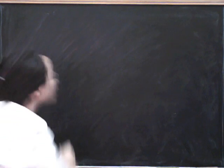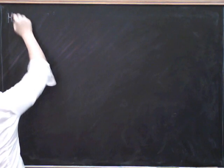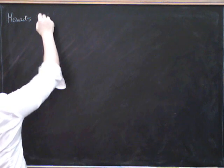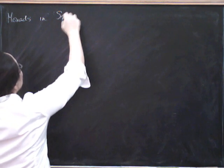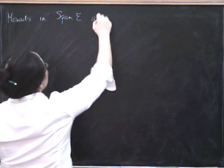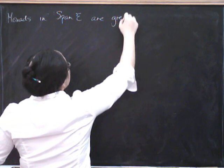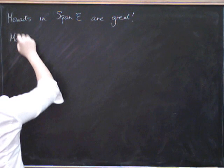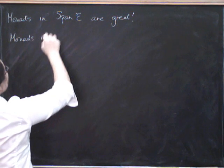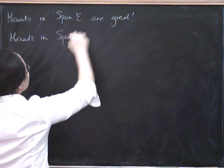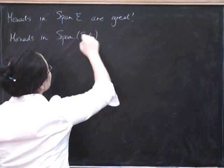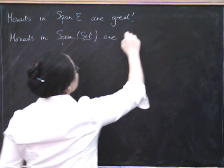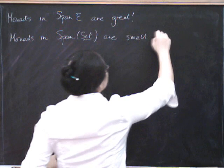So the point I really want to make is the following. It turns out that monads in this bi-category are really fantastic in span E are great. Well, let's take E to be sets. Monads in span set are small categories.